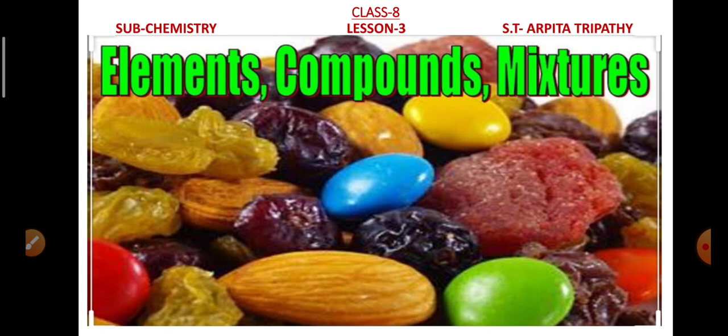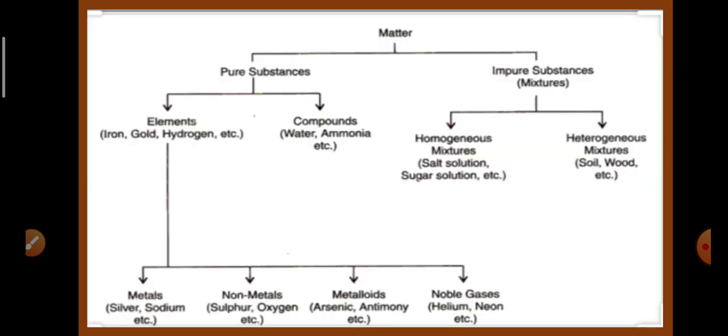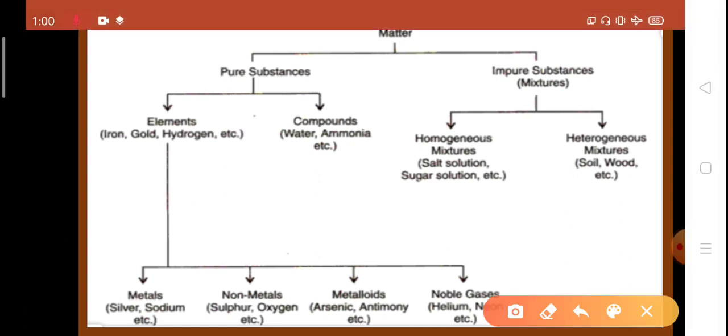But before that, let's see the classification of matter. Matter is anything that has mass, occupies space and can be perceived by our senses. It is divided into pure substances and impure substances or mixtures. Pure substances are further divided into two parts, elements and compounds.